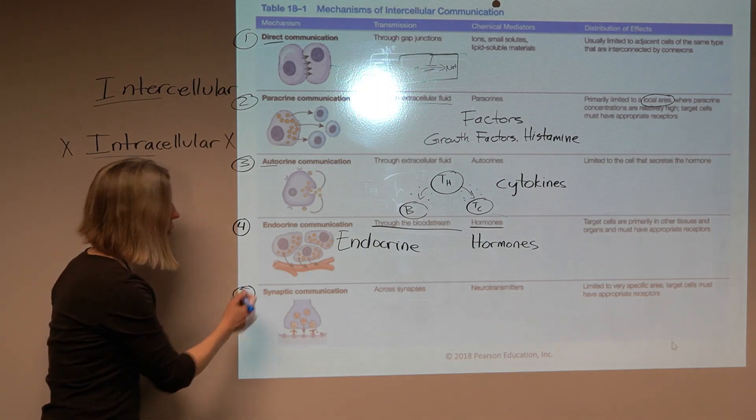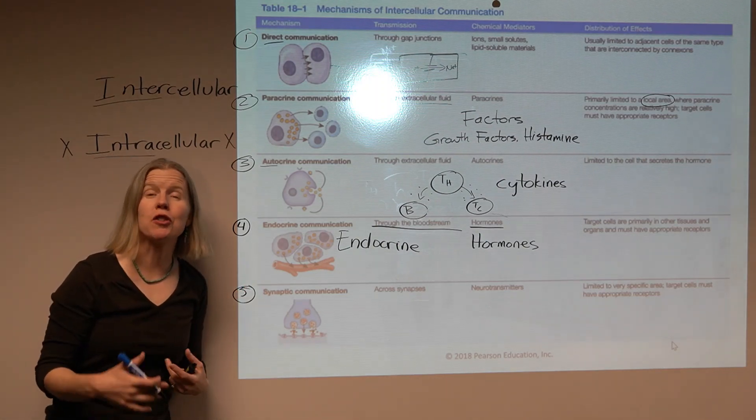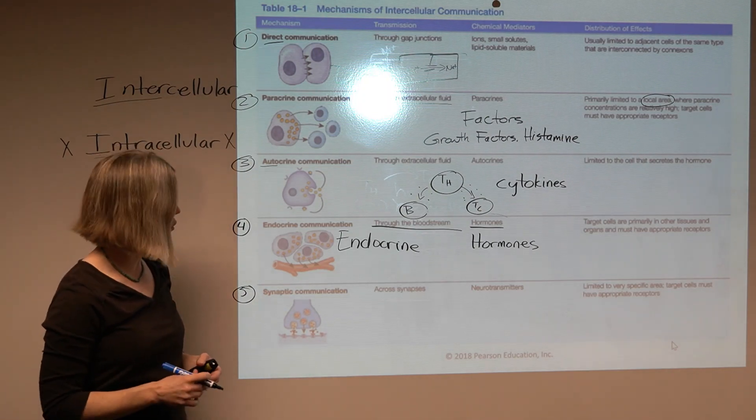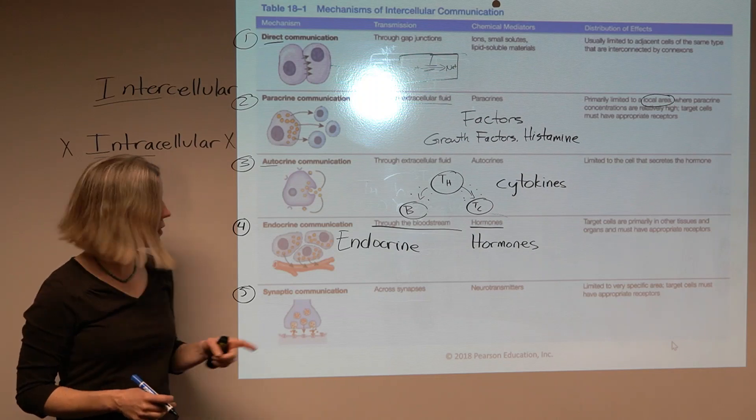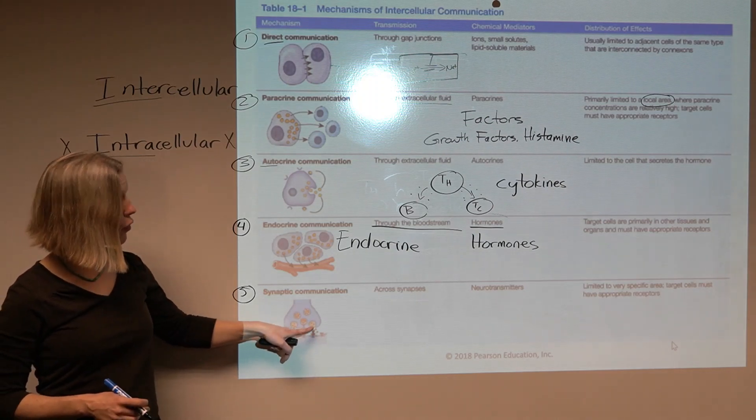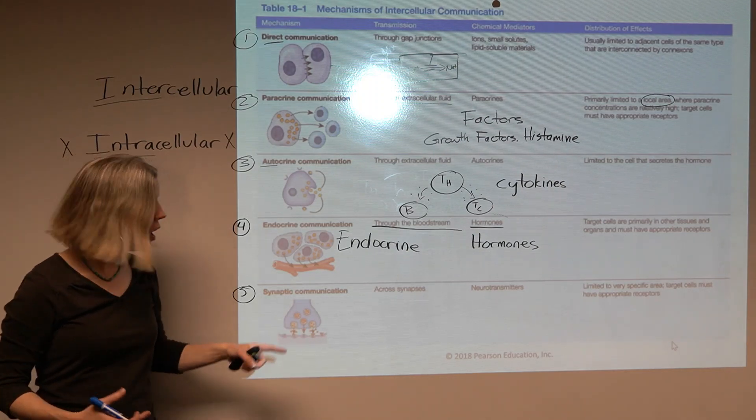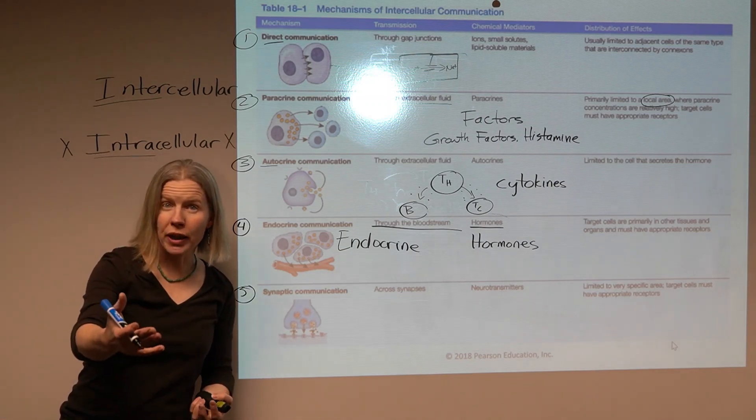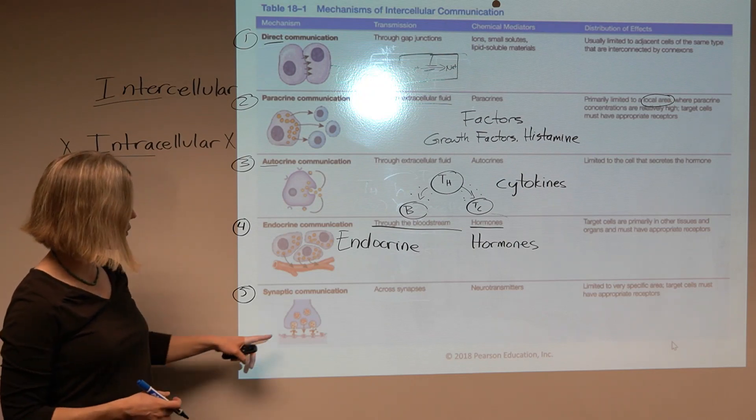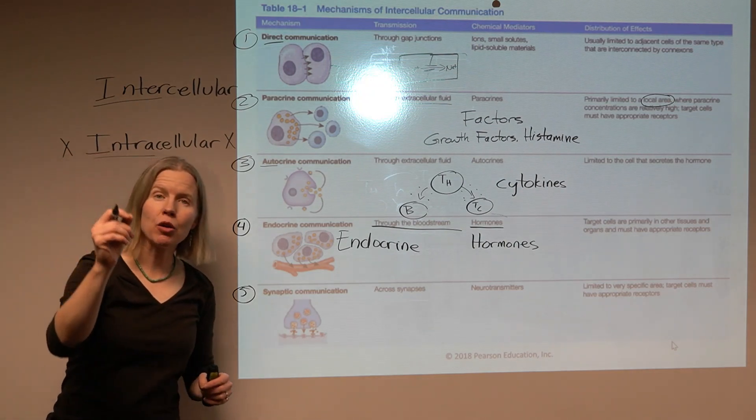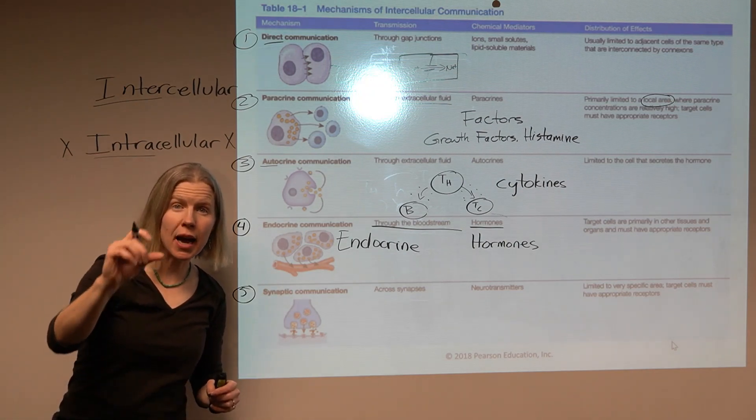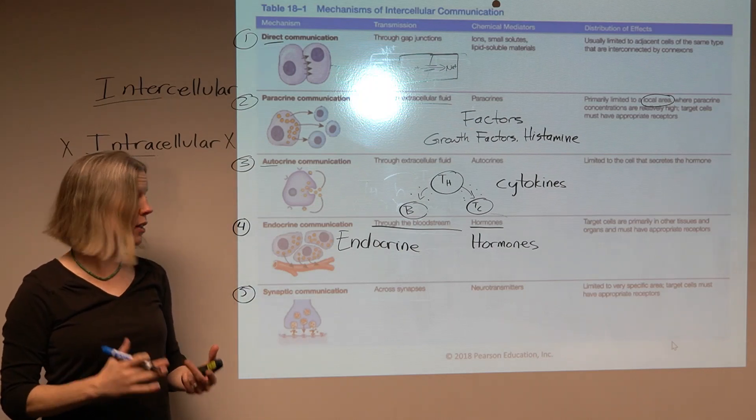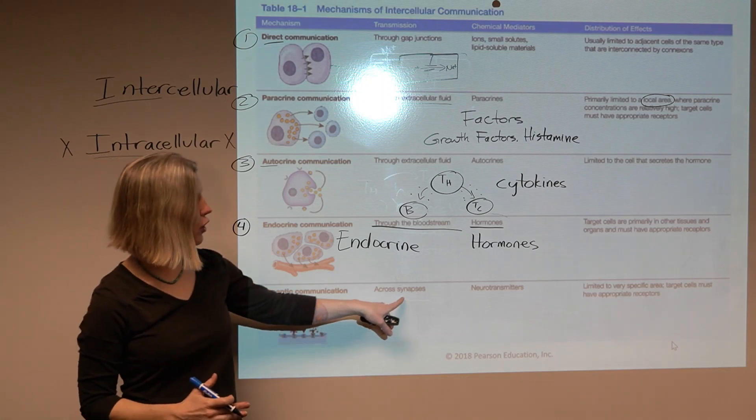And then last but not least on their list here is synaptic communication, which may be the type of communication that you're most familiar with because that's what you finished A&P1 talking about in the nervous system. So a quick reminder here, they're showing the axon terminal. We have these little vesicles filled with something like acetylcholine. It could be another neurotransmitter, but acetylcholine is a really common one. That chemical message has to cross the synapse, the gap between the axon terminal and that target cell. So it travels across the synapse, the neurotransmitter does.